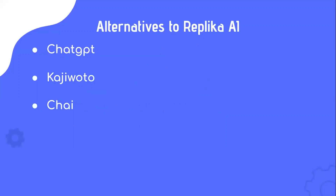Alternatives to Replika AI include ChatGPT, Kajiwoto, and Chai.